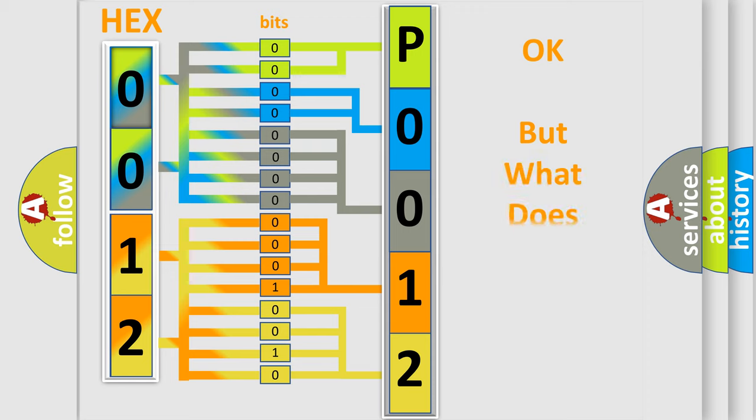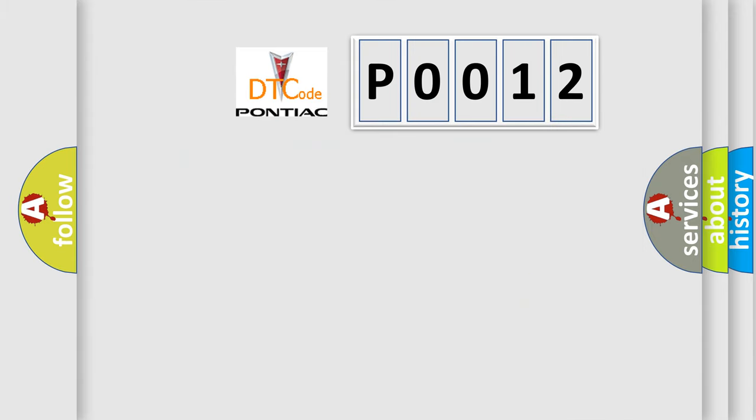The number itself does not make sense to us if we cannot assign information about what it actually expresses. So, what does the diagnostic trouble code P0012 interpret specifically for Pontiac car manufacturers?